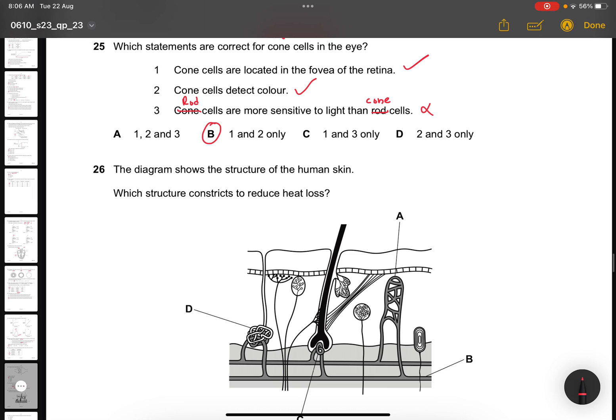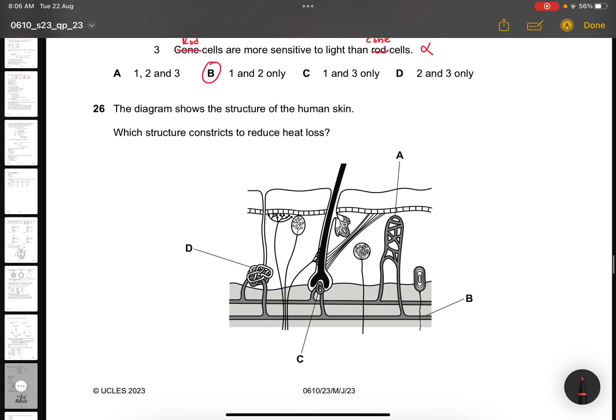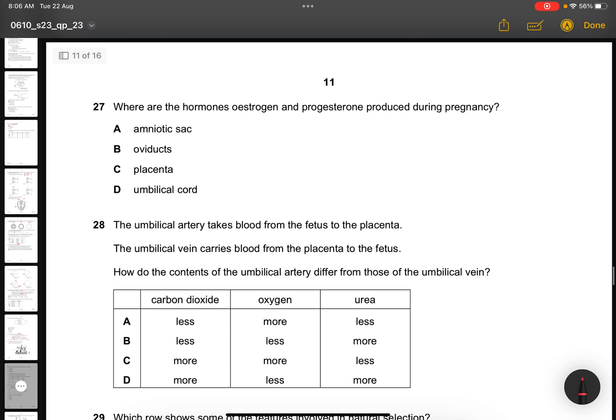Question 26. The diagram shows the structure of human skin. Which structure constricts to reduce heat loss? B. These are the main arteries that control blood flow. When there's more blood flow, they want to reduce the heat loss. Question 27. Where are the hormones estrogen and progesterone produced during pregnancy? It's by the placenta. You should be familiar with this.